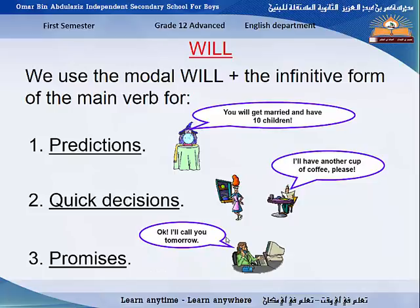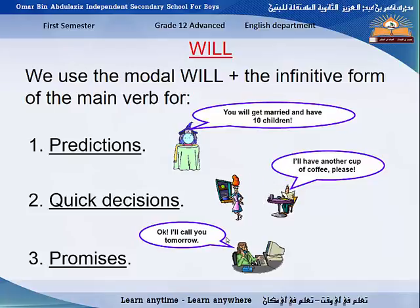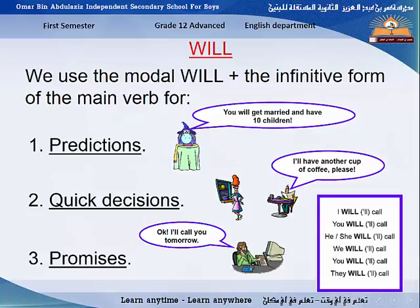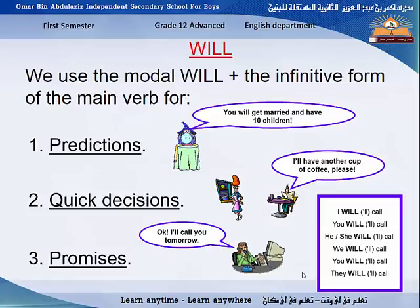The third use of 'will' is for a promise. You can use 'will' to give a promise. Sometimes we use a promise to talk about something you just want to do in the future, but you are not sure if you are going to do it or not. Example: 'I'll call you tomorrow.' Here we got the forms for 'will': 'I will,' 'you will,' 'she will,' 'we will' — it can be abbreviated to apostrophe double-L, especially in informal language.